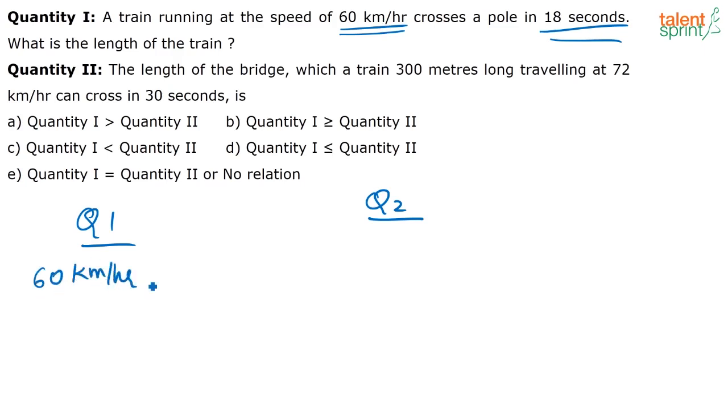So 60 kilometers per hour is how many meters per second? Multiply by 5 by 18 meters per second. That equals 50 by 3. 6 will go here, right? 10. 50 by 3 meters per second. So 60 kilometers per hour is 50 by 3 meters per second.